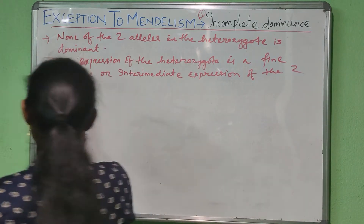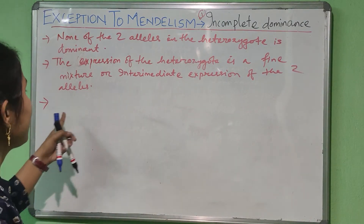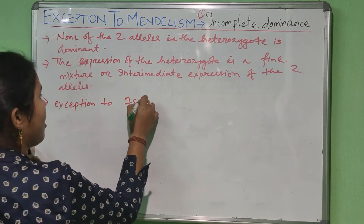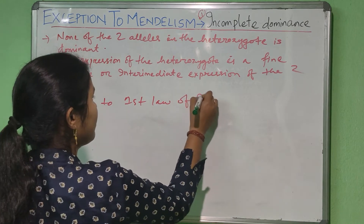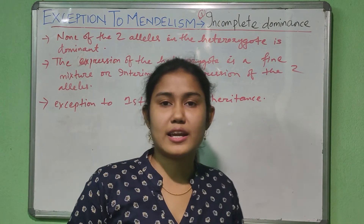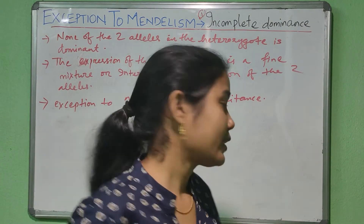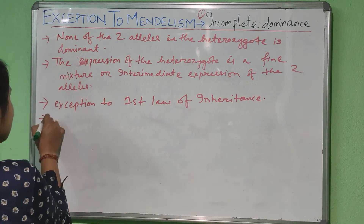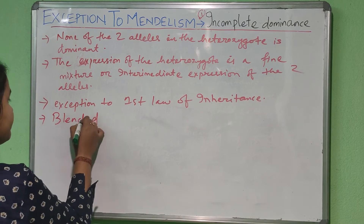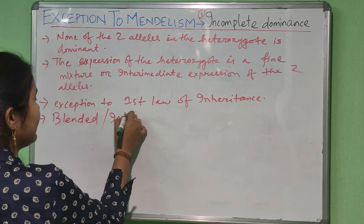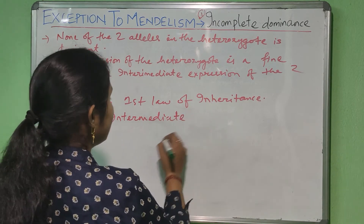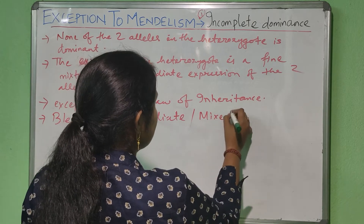Incomplete dominance is the exception to the first law of inheritance, that is the law of segregation or the law of purity of gametes. This phenomenon is also known as blended dominance, intermediate dominance, or mixed dominance.